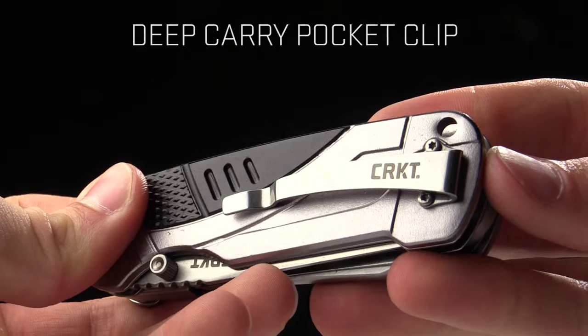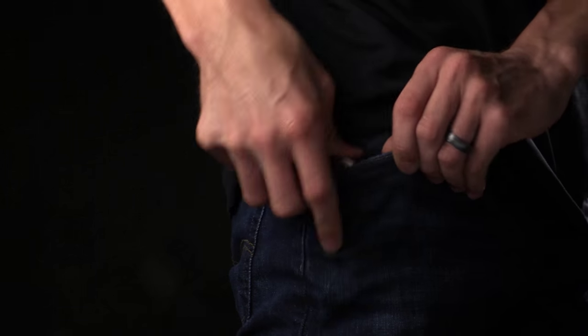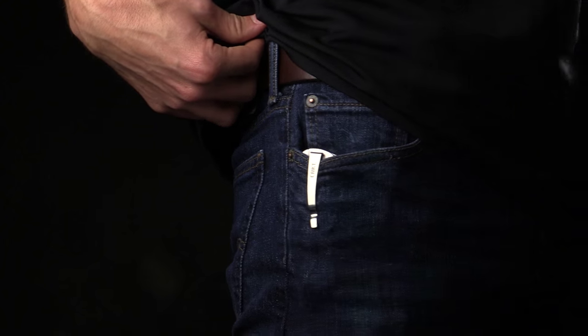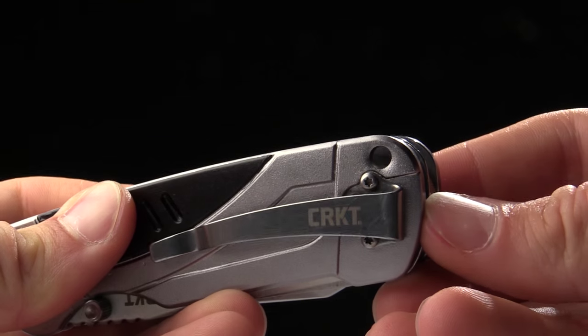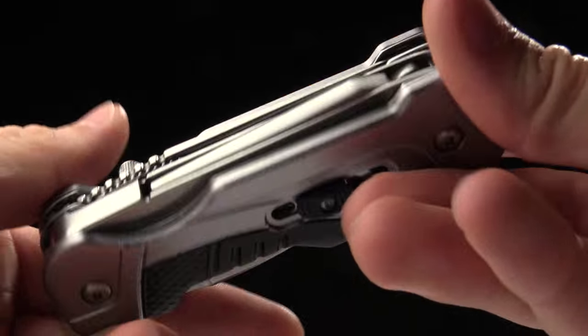You've got a deep carry pocket clip on there. Let me show you a shot of that in my pocket. So you can carry that in your gear however you would like. As well you've got a lanyard loop right there, lanyard hole to rig it up. Stick a leash on there so you don't drop it.